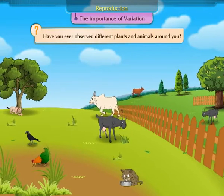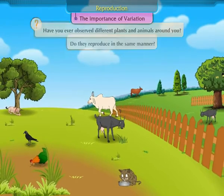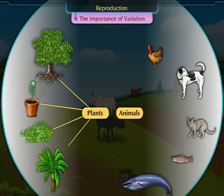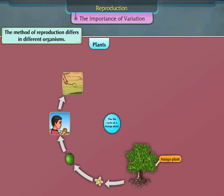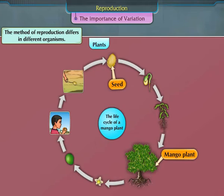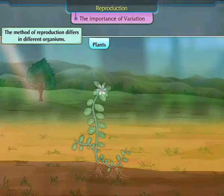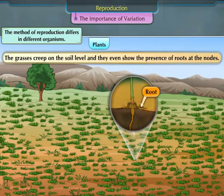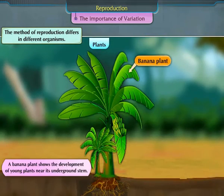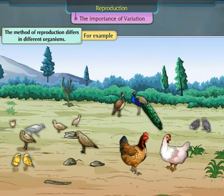Different plants and animals reproduce in different ways. A mango plant germinates from a seed, but a jasmine plant shows rooting at the soil level. Grasses creep on the soil level and show the presence of roots at the nodes. A banana plant shows the development of young plants near its underground stem.